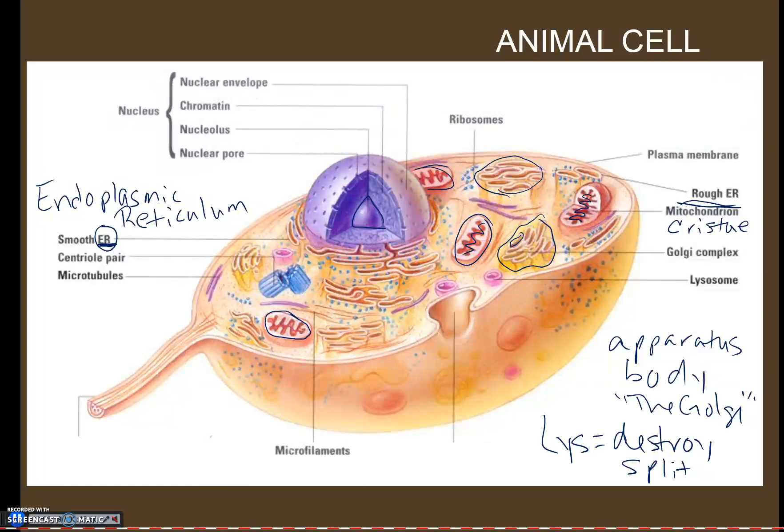Part of the cytoskeleton is going to be microtubules and microfilaments. Easy way to remember the difference between the two is a microtubule is a thin hollow protein fiber and a microfilament is a thin solid protein fiber. And the parts of the cytoskeleton, the microtubules and microfilaments, are involved in organelle support. They just kind of keep the organelles in their shape and keep them together and where they're supposed to be.